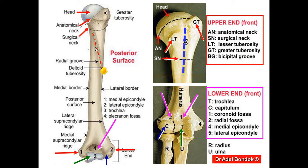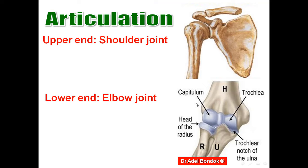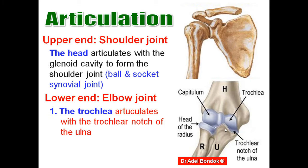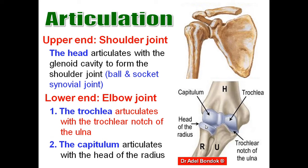Regarding the shaft, the posterior surface has a spiral groove — also called the radial groove — because it is related to the radial nerve. This tuberosity is called the deltoid tuberosity because it gives insertion to the deltoid muscle. The upper end of the humerus — the head — articulates with the glenoid cavity to form the shoulder joint, a ball-and-socket synovial joint. The elbow joint is formed of the humeroulnar part (trochlea and trochlear notch of ulna) and the humeroradial part (capitulum and upper surface of the head of the radius).